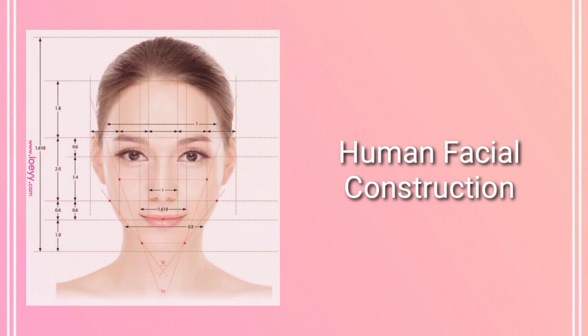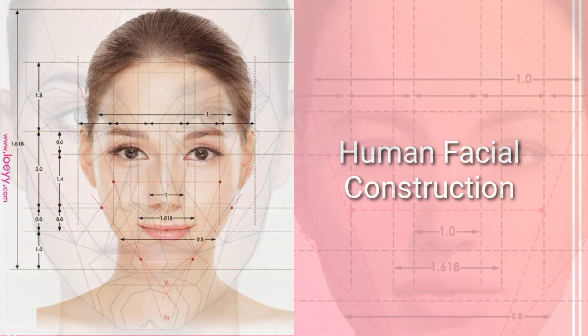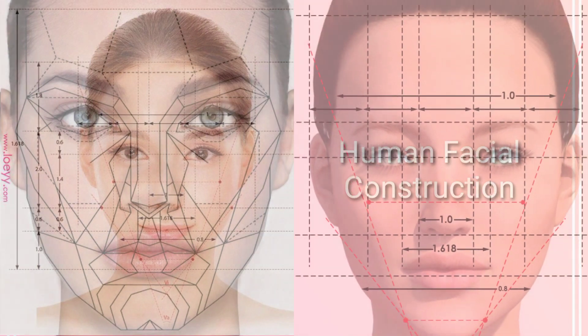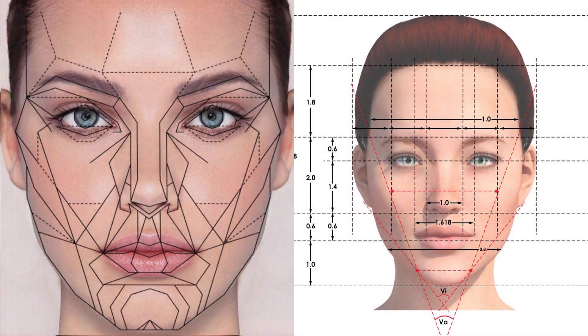Number one: human facial construction. The golden ratio translates directly to facial plastic surgery. It states that a traditionally beautiful person's face is approximately one and a half times longer than it is wide. When facial plastic surgery first became wildly popular, patients would often bring in photos of their favorite celebrity expressing the desire for a perfect nose.